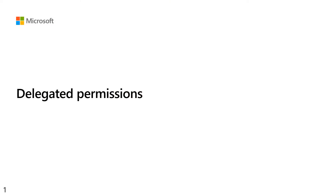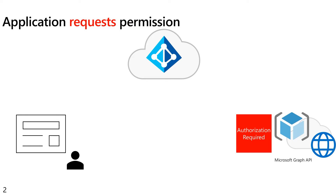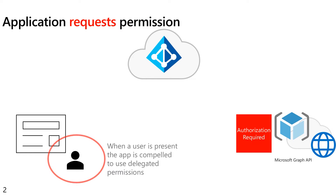Hi, I'm Kyle with the Identity and Network Access Group here at Microsoft, and in this video I want to talk about delegated permissions. Applications often need to be authorized in order to access a resource or a web API. Whenever there is a user in front of your application, you're compelled to act on behalf of that user and ask for a delegated permission, which simply means your application has a user and the application is going to be working on behalf of that user.